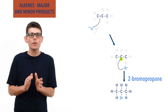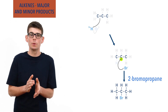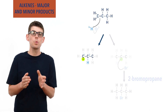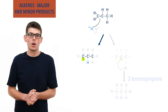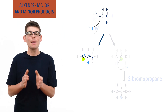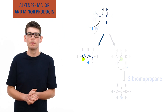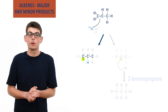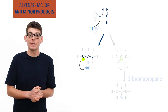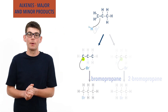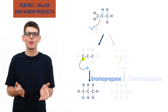However, if the hydrogen bonds to carbon 2 in the propene molecule, carbon 1 will end up with a positive charge in the intermediate — a primary carbocation. The bromide ion will bond to carbon 1 in the intermediate, and 1-bromopropane, or just bromopropane, will be formed.